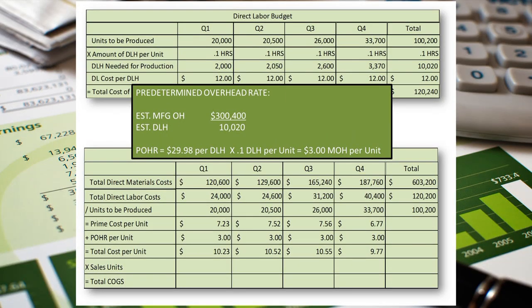Next, we add overhead to the direct material and direct labor costs. Our predetermined overhead rate from the production budget is $29.98 per direct labor hour. From our direct labor budget, we see that it takes one tenth of a direct labor hour to make one unit. So our allocated or applied manufacturing overhead is $3 per unit rounded. Once we add those together, we arrive at our product cost per unit.